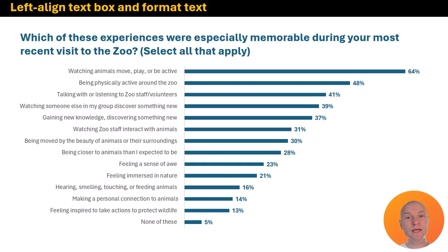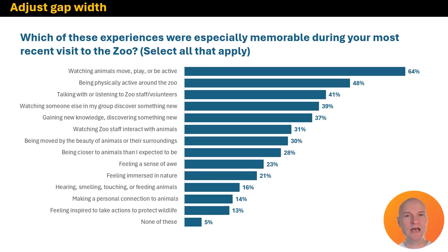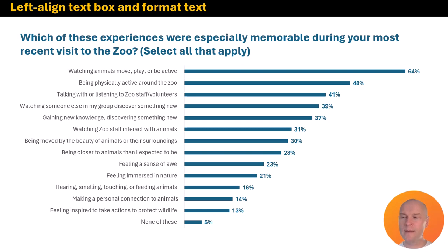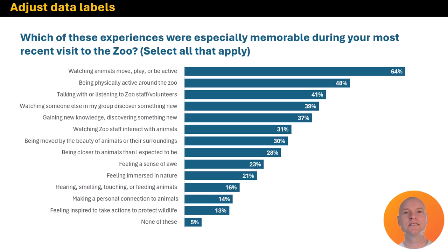We're going to make the title much bigger and left-align it, because most of us read left to right, and we want the most important thing to start in that upper left corner. But the title shouldn't just be the survey question name — I want it to be a takeaway statement about the data. I'll add that in a moment. First, I'm going to reduce the gap width between the bars to make them nice and thick. That saturates the page, puts more data in view, and draws the eye. Then we'll move the labels from outside the bars to inside the bars — a really nice touch when bars are long enough to accommodate it, and very visually appealing.